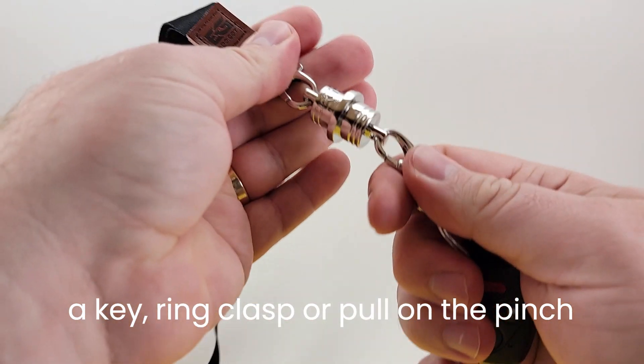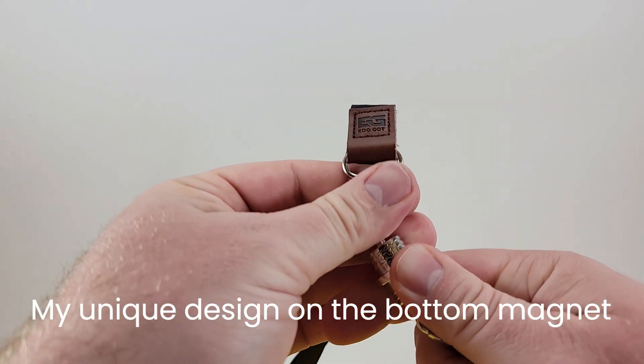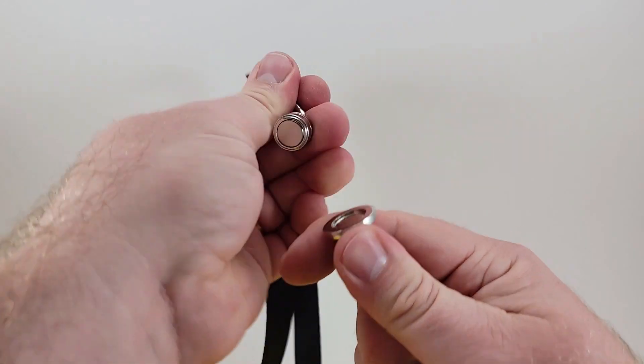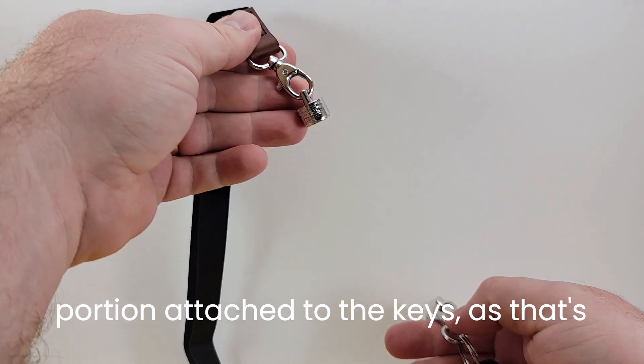You can take them apart by holding the keyring clasp or pulling on the pinch guard. A unique design on the bottom magnet has a pinch guard to protect your fingers. It's important to have the lower portion attached to the keys, as that's the part you will always hold when connecting it back together.